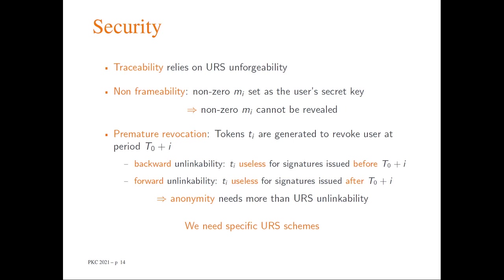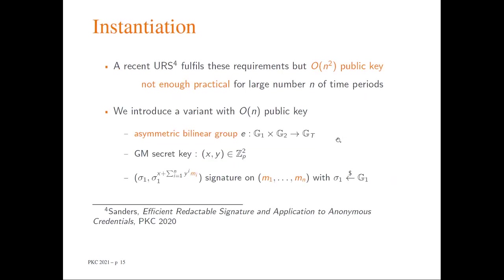Achieving anonymity requires more than simple unlinkability of the redactable signature scheme, meaning we need specific redactable signature schemes, and the basic idea described does not work exactly as stated — we need to address some subtleties. One such scheme was recently proposed at PCC 2020 and fulfills all necessary requirements, but it suffers from a limitation regarding public key size, since public keys are of quadratic size.